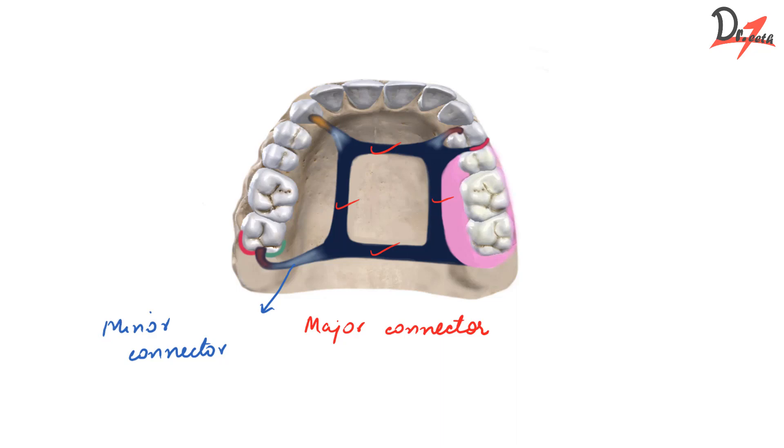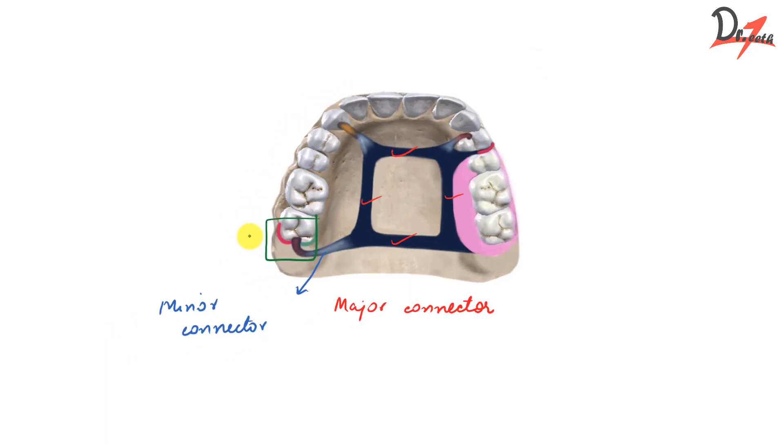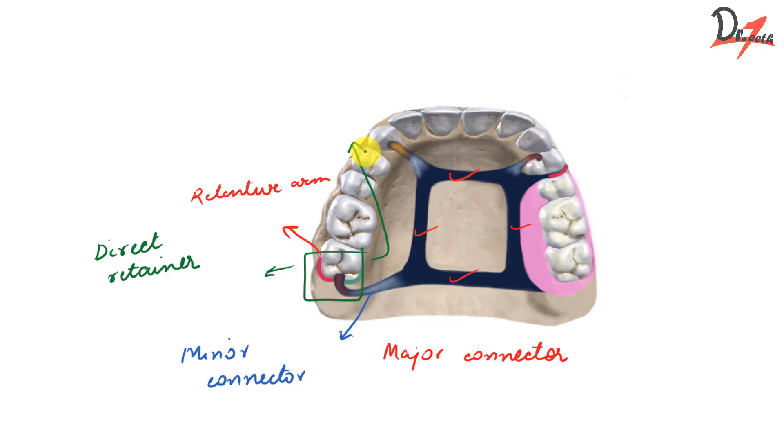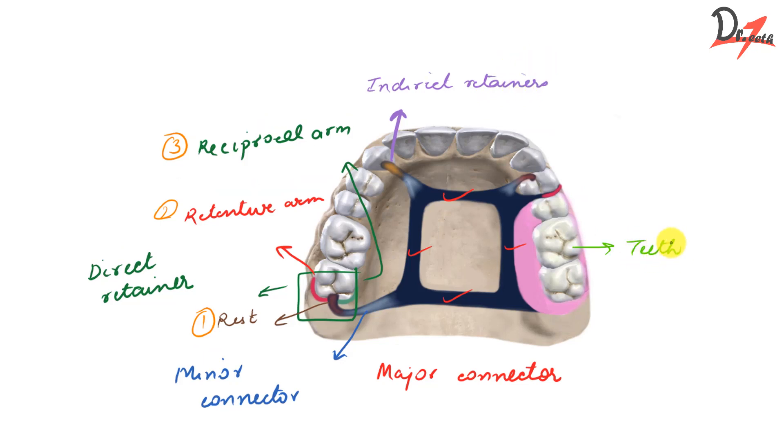And then we saw this thing, this assembly here, which is the direct retainer, which is further divided into three. We have this in red, that is called the retentive arm. This in green is called the reciprocal arm. And this in brown is the rest. So we have one, two and three, and then we saw the indirect retainer. And finally, we have the teeth and the denture base.